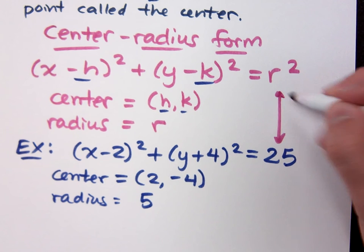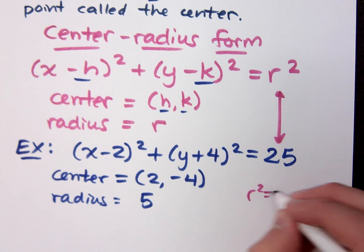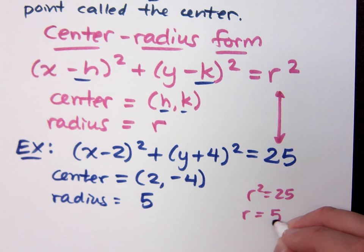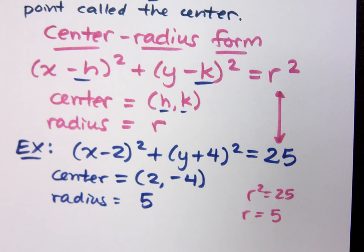And the way we got the 5 here is because we know this. According to my form, check this out. If r² equals 25, then what must your r equal? Yes, it's got to be 5. Yes, it's got to be 5.